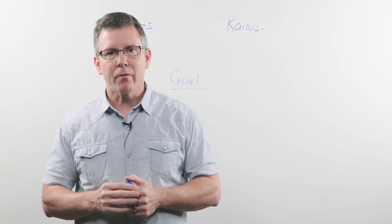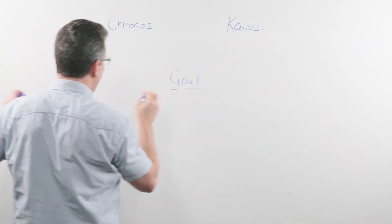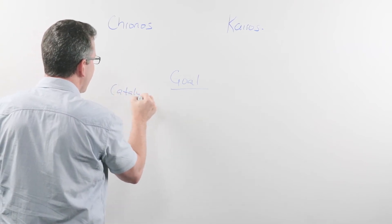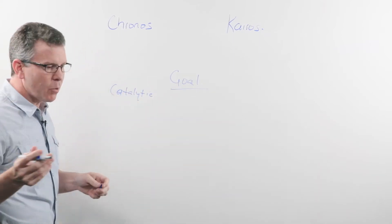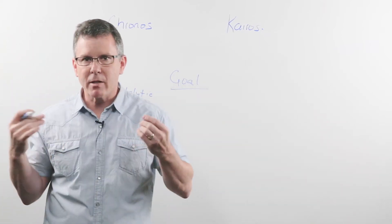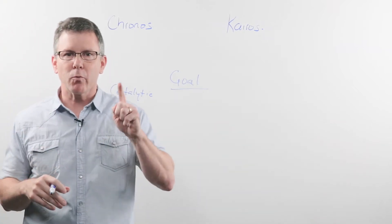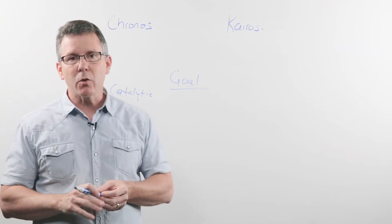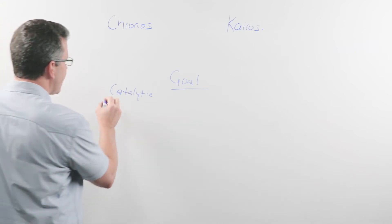Take the kairos moments and say what are the catalytic moments, what are the catalytic things that I can do that would move me forward. Let's take for example if your issue was marriage and you wanted your marriage to be better. A catalytic moment could be that you're going to choose to read a book on marriage together with your spouse, or maybe you're going to go to a marriage event. The key to these catalytic moments is that they're one-time events. You do it one time and it'll get you started, it gets you moving forward.